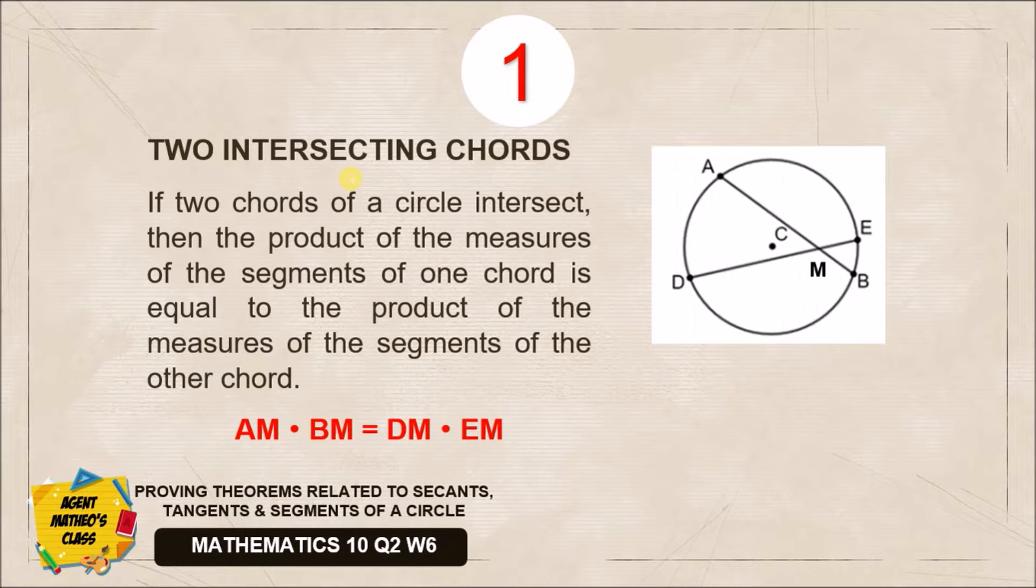Our very first theorem to entertain is about two intersecting chords. If two chords of a circle intersect, then the product of the measures of the segments of one chord is equal to the product of the measures of the other chord.